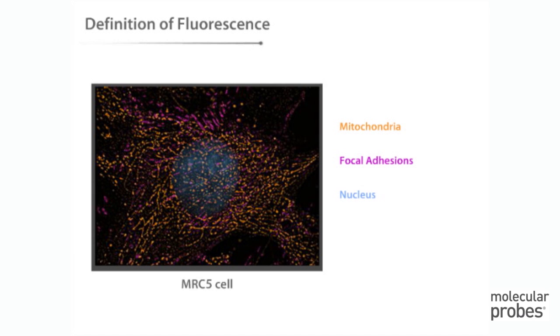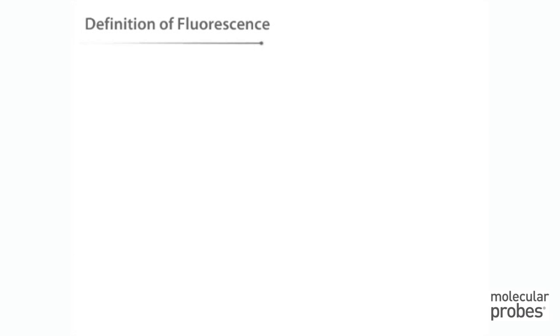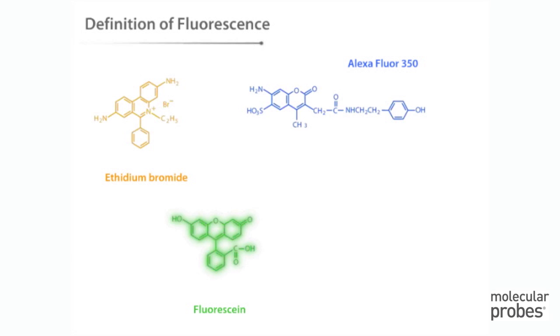This tutorial will give you a basic introduction to the fluorescence process and definitions of some key terms that you will encounter as you learn more about fluorescence. Examples of some widely used fluorescent dyes are ethidium bromide, alexa-fluor dyes, and fluorescine.